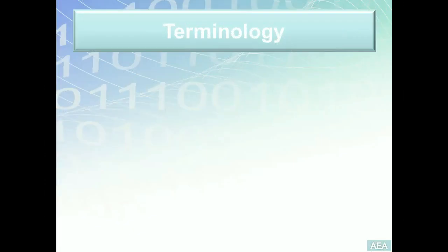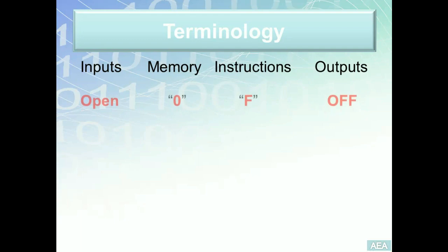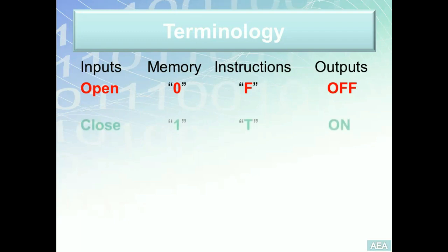Before we introduce the first discrete instruction, it's really important to understand how the PLC internal memory is going to interpret and read the states of discrete inputs and outputs. Discrete inputs and outputs can be one of two states — hence the name discrete. A discrete input could be in an open state or a closed state. We don't care what type of switch it is — push button, level switch, or toggle switch. What matters is: if that switch is currently open, it will be read in the PLC memory as logic zero; if it is in the closed state, it will be read as logic one.